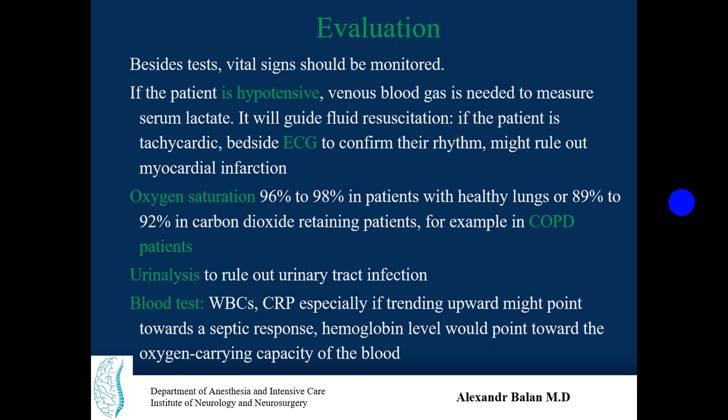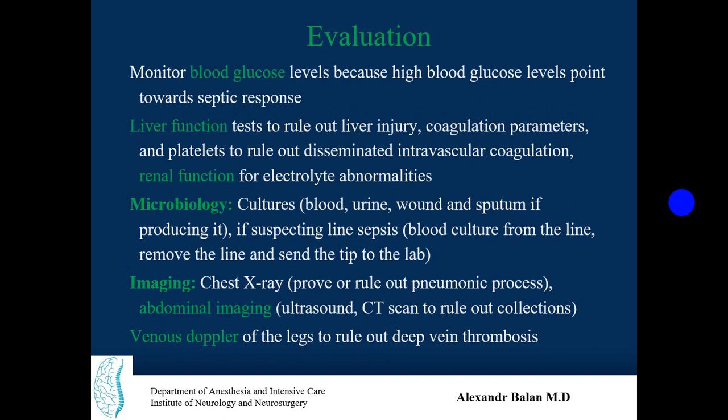Hemoglobin level should be taken as it points towards the oxygen-carrying capacity of the blood. Monitor blood glucose level, because a high blood glucose level points towards a systemic response. Check liver function to rule out liver injury, coagulation parameters, and platelet function to rule out disseminated intravascular coagulation. Assess renal function for electrolyte abnormalities.